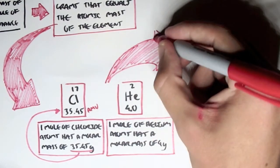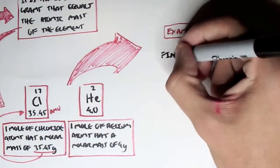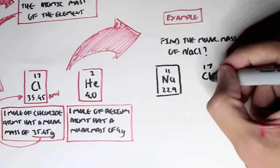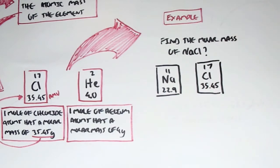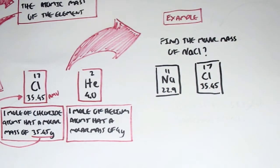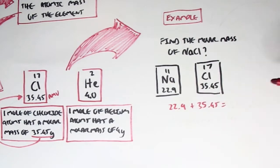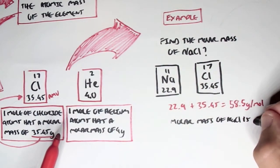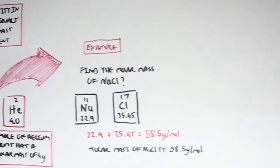For example, a question: find the molar mass of salt, NaCl. We look up the atomic mass units of both sodium and chloride, and because we're talking about one molecule of NaCl, we add 22.9 plus 35.45, which gives us 58.5 grams per mole. So the molar mass of salt is 58.5 grams per mole.